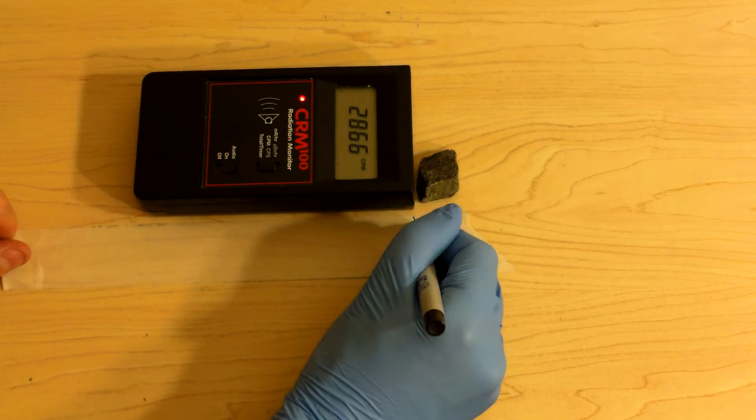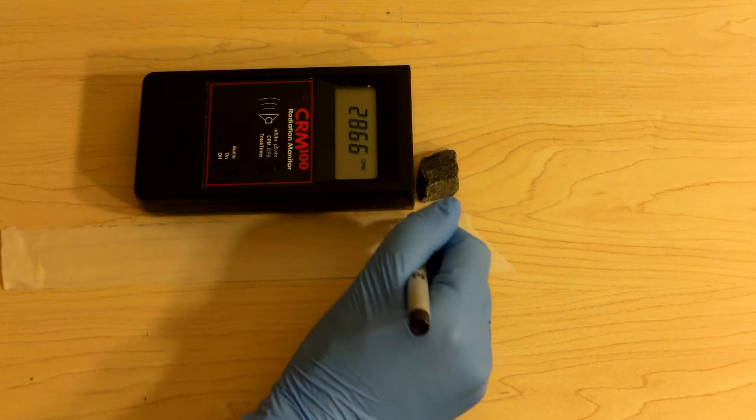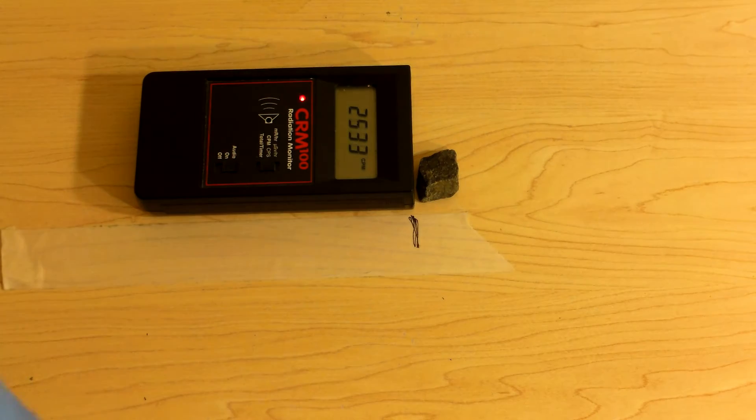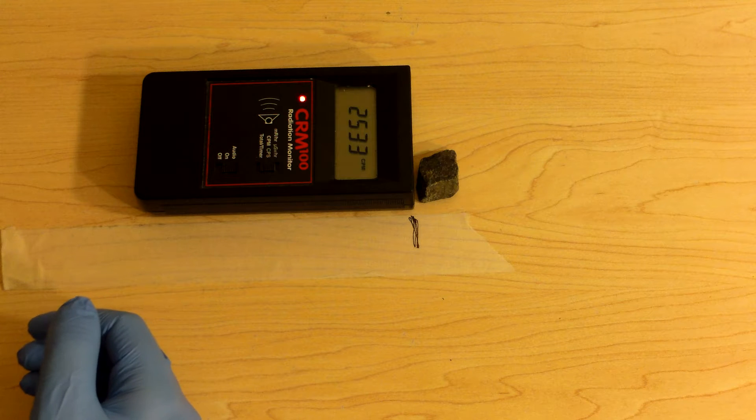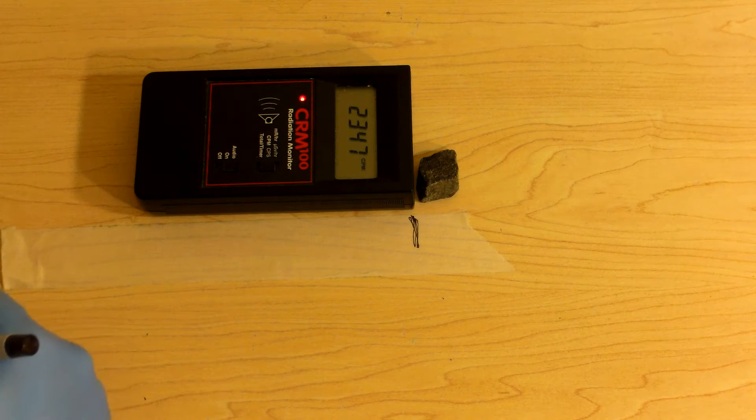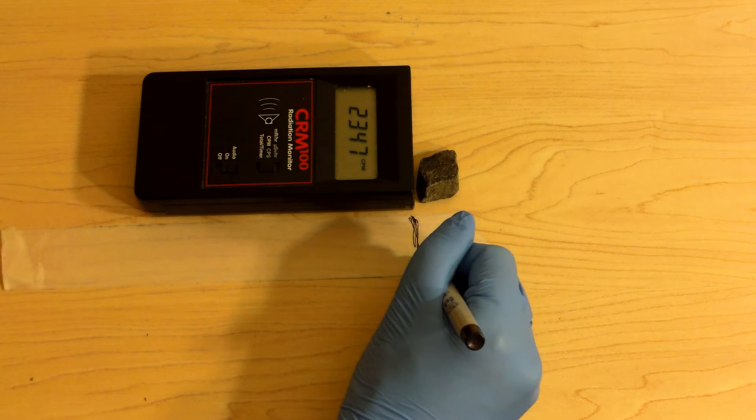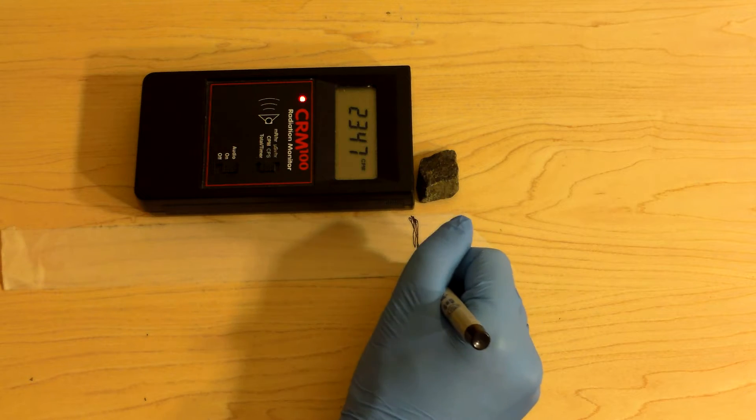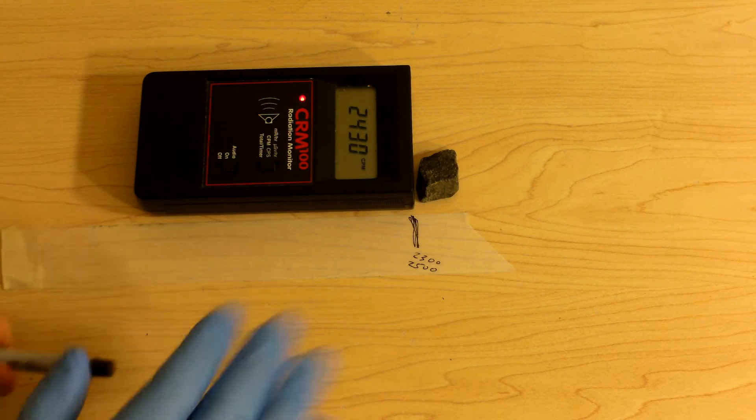So, the detector starts about here. What do we get? We get about 2,500 counts per minute. 2,300. 2,325 is what I'm going to write down a little piece of paper. It's about right. Watch this.